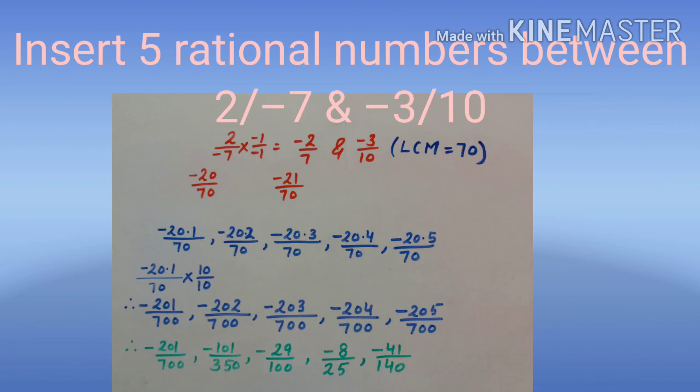Now, we will write equivalent rational numbers to the given rational numbers with same denominator, that is LCM. Therefore, minus 2 upon 7 will be minus 20 upon 70, and minus 3 upon 10 will be minus 21 upon 70. After these steps, we can do five different methods.